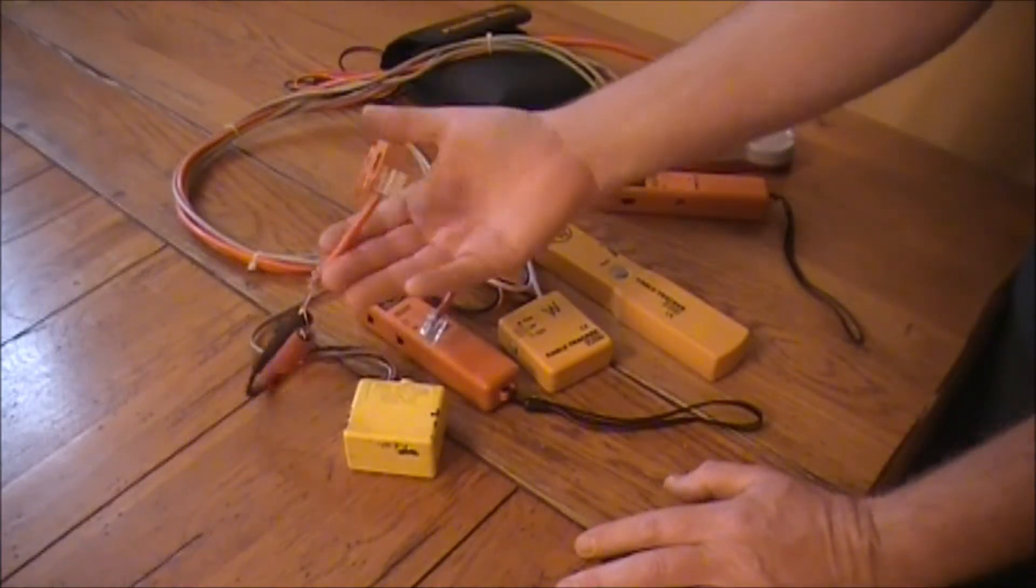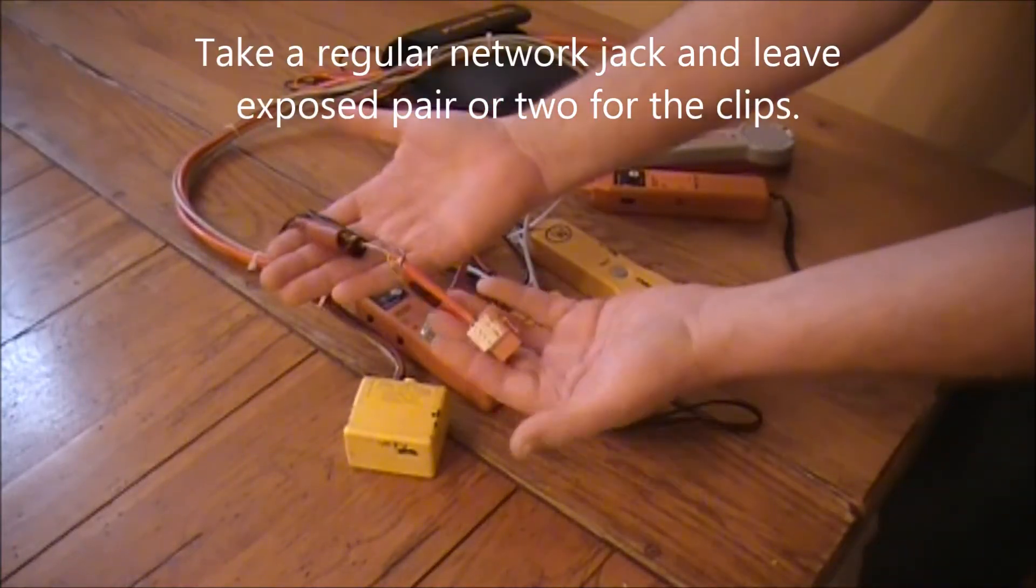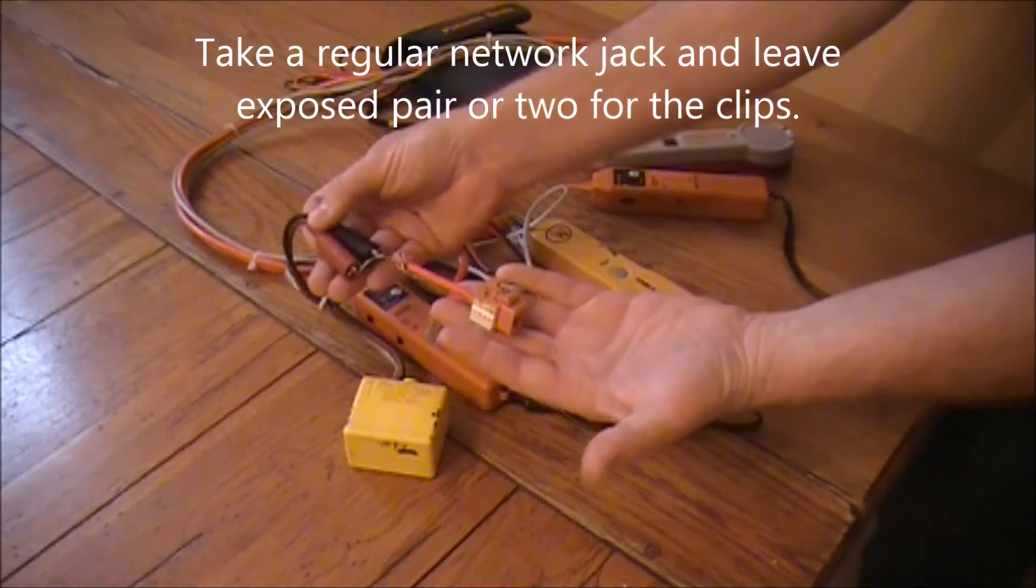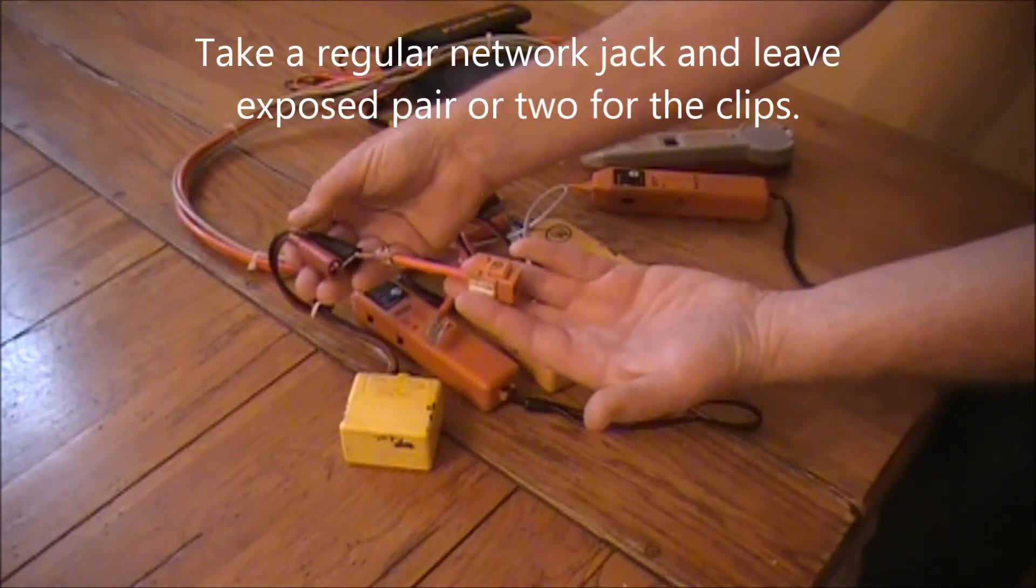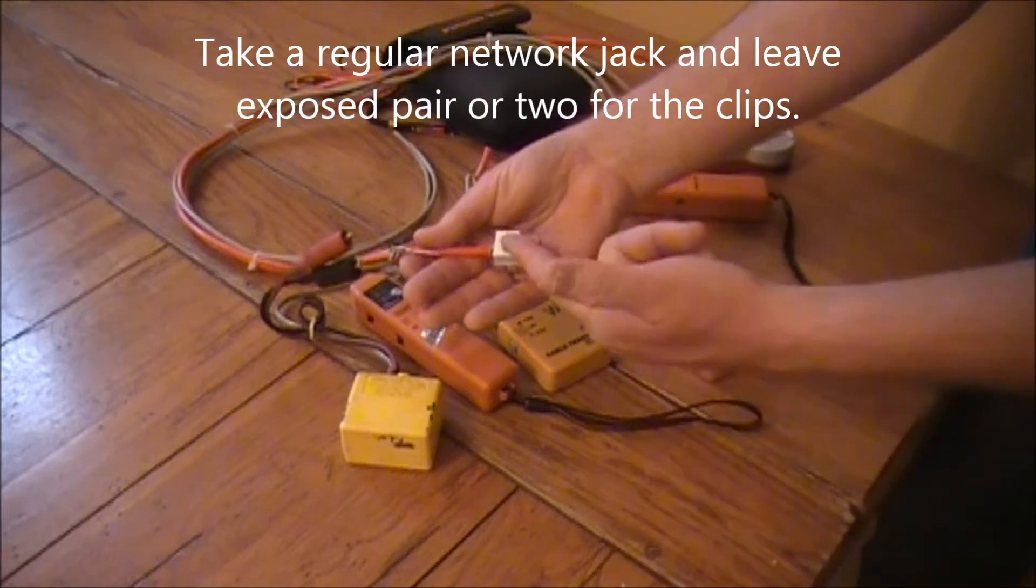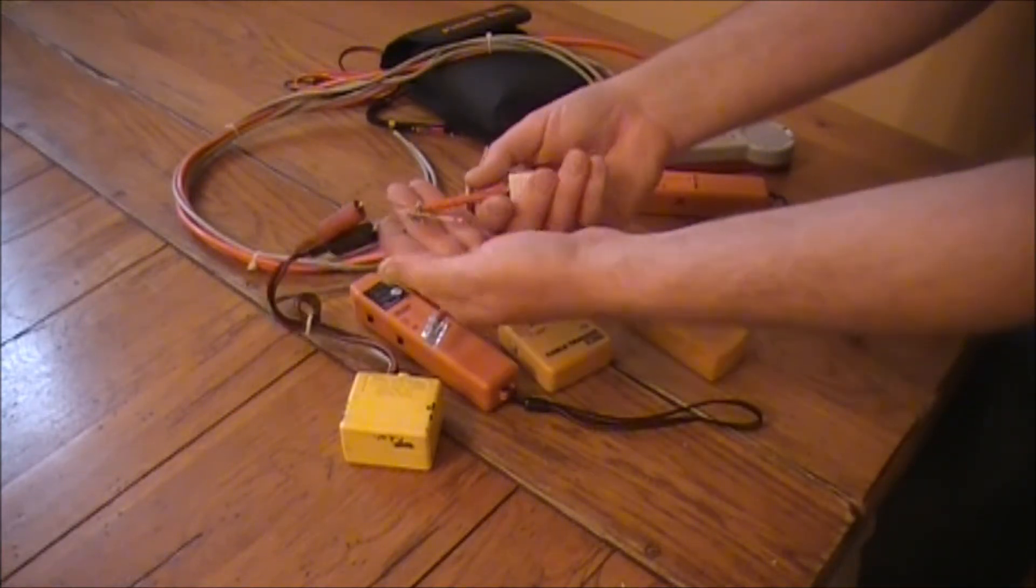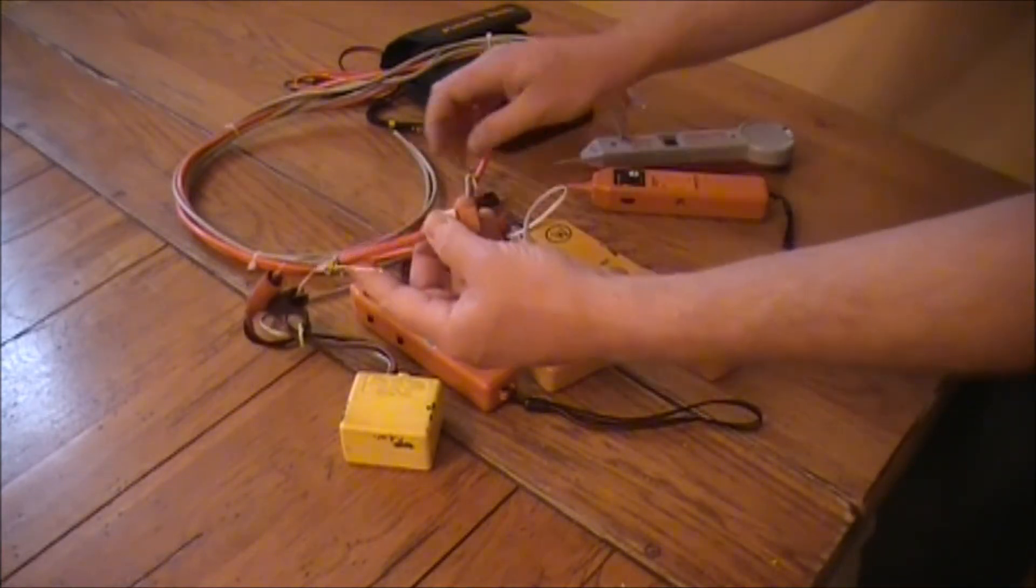We use this a lot on cables that we just don't want to splice or anything like that, and this comes in handy on patch panels or anything. It's a regular jack, just a little old jack. You got the pair out there, you stripped it out there, and you can attach it to your alligator clips.